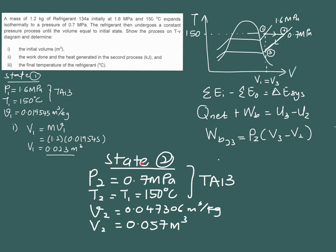For state 2, we are given P2 = 0.7 MPa, and since this is a constant temperature process, T2 equals T1 = 150 degrees C. Since we have both pressure and temperature for state 2, we check straight away from the superheated table — table A13 for refrigerant R134a. From the table, the specific volume is 0.047306 m³/kg. Multiplying by mass, V2 = 0.057 m³. This value is slightly higher than V1, confirming this is an expansion process.